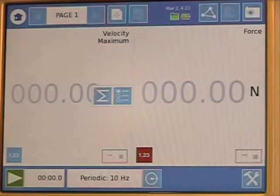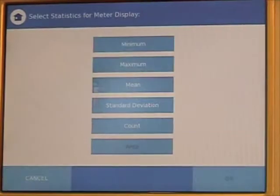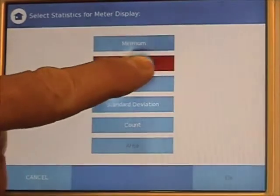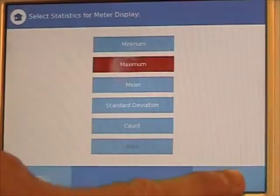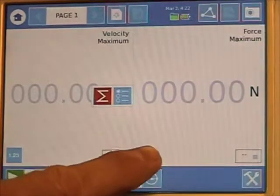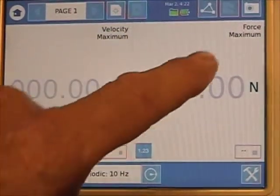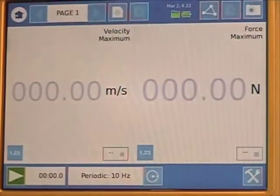I press sigma. I have to press it again. Press maximum. Press OK. Press the number icon again, and the sigma disappears. We now are recording maximum velocity and maximum force.